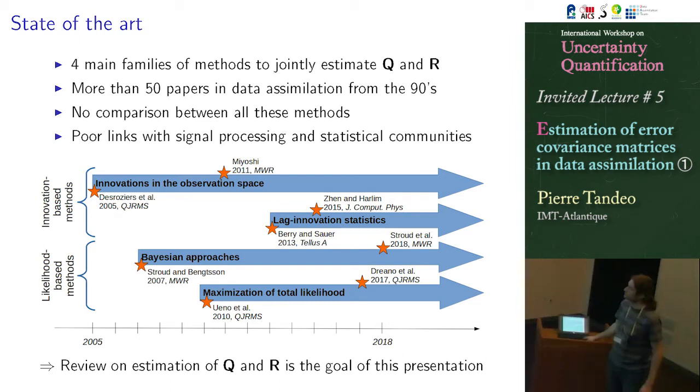So he was the first really to try to estimate both Q and R matrices. And then I think an important paper is given by Takemasa. So I think for me, it's one of the best papers for this specific method. So I will explain this quickly later. And you have also different methods based on lag innovation. I will talk about this.